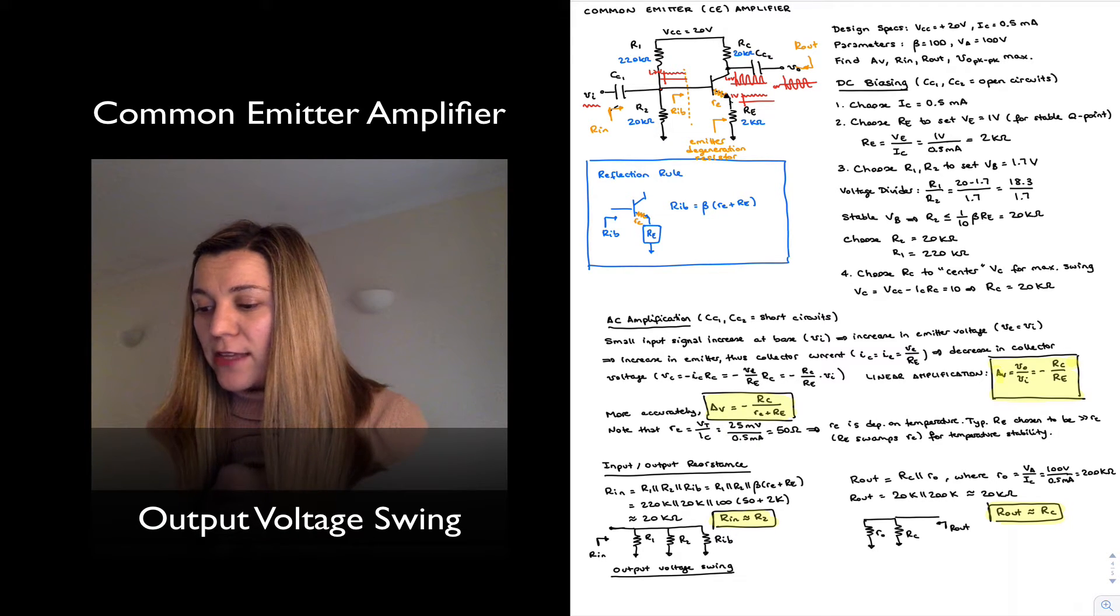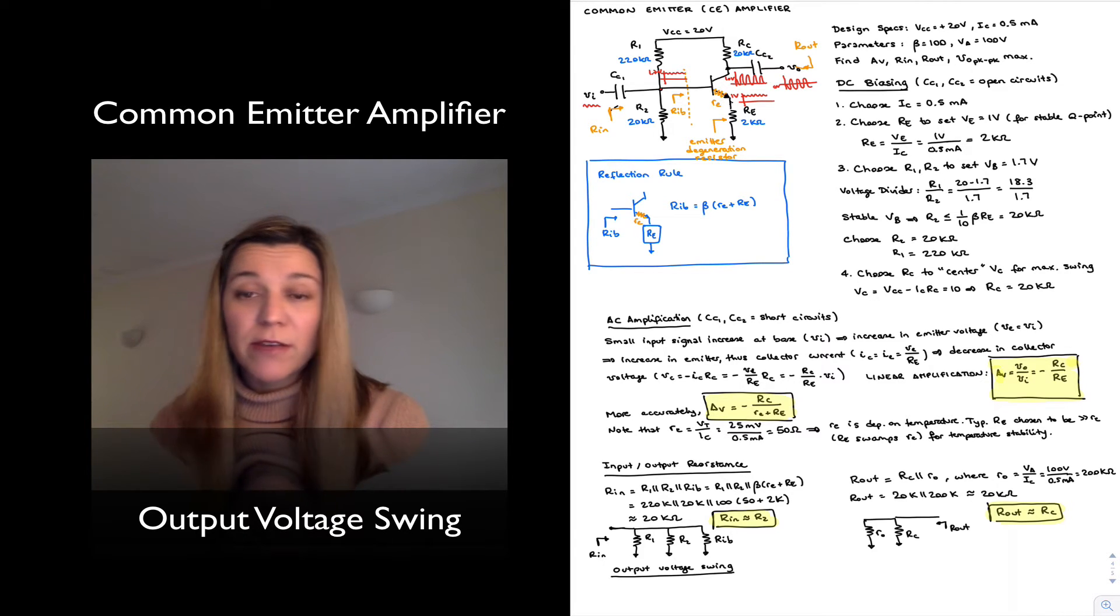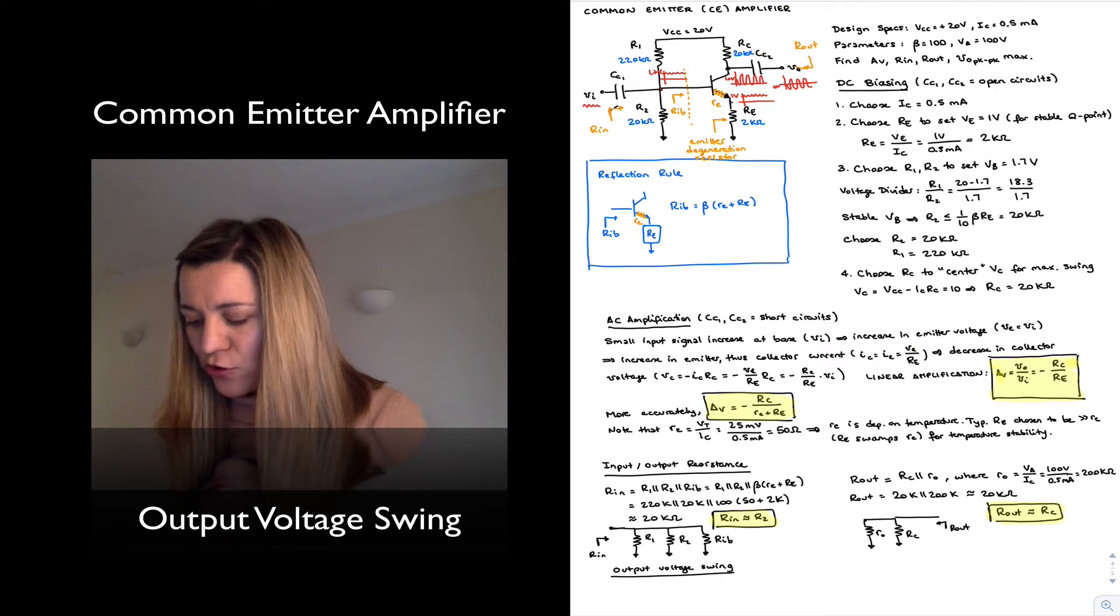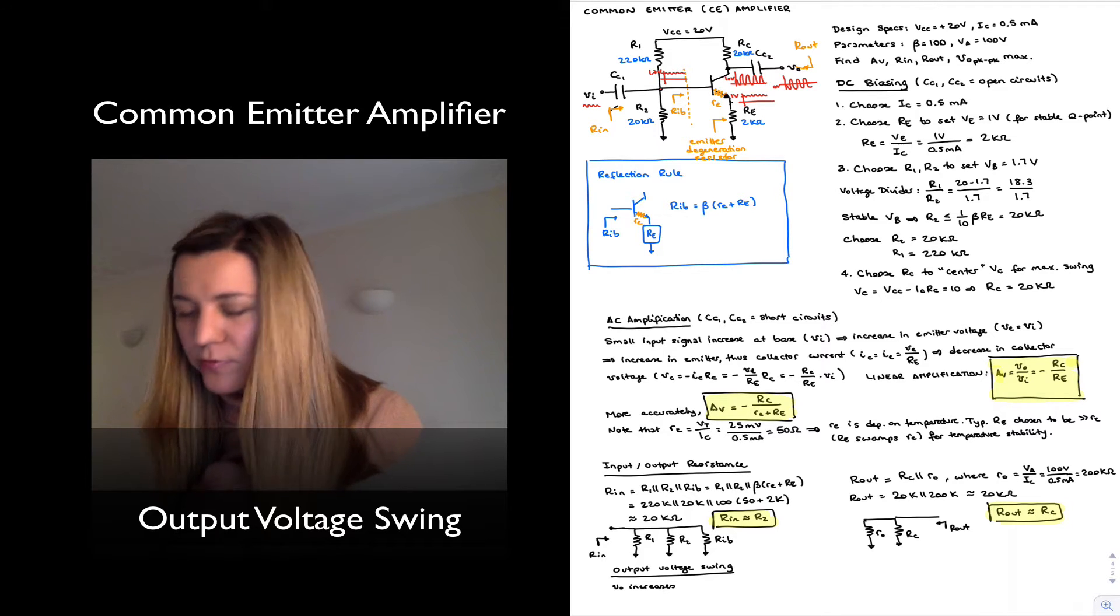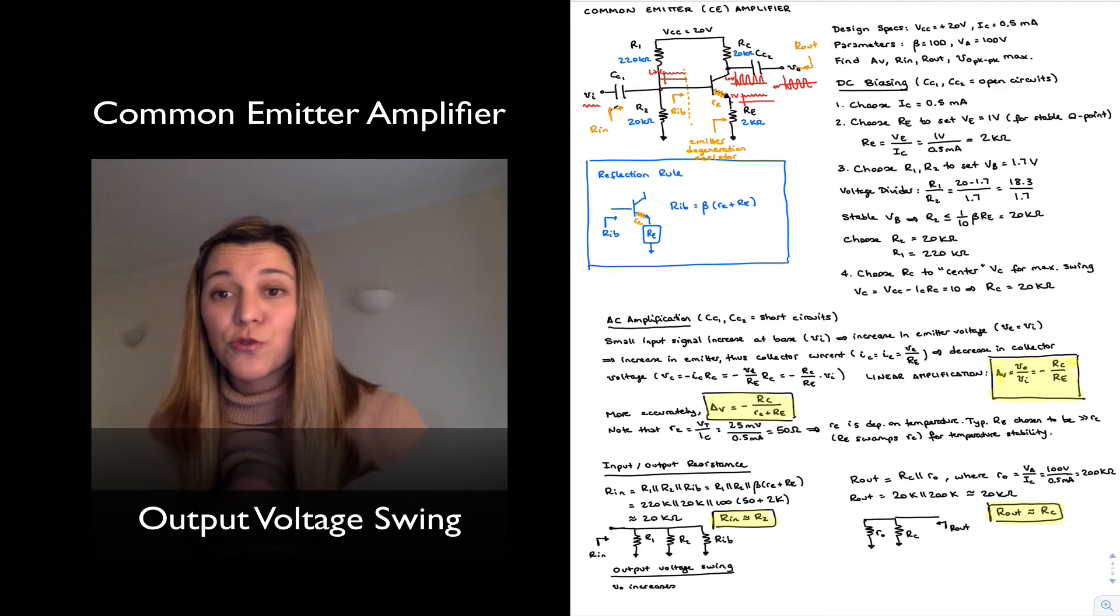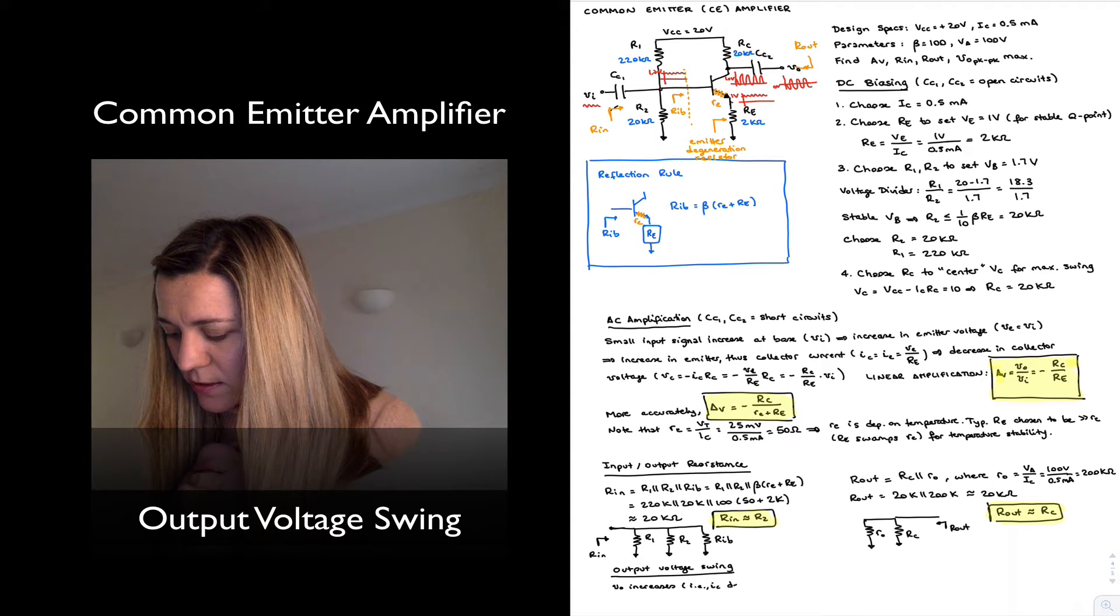The output voltage may increase or decrease, so it may swing in the positive or negative direction. If it's swinging in the positive direction, then Vout increases. And that's due to a decrease in IC, so IC decreases.